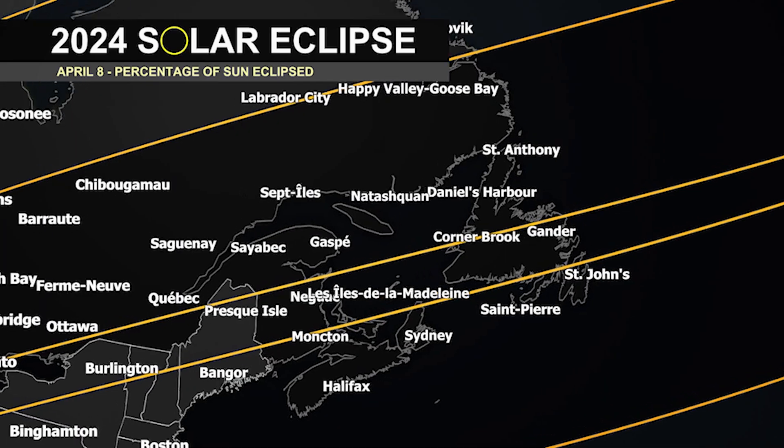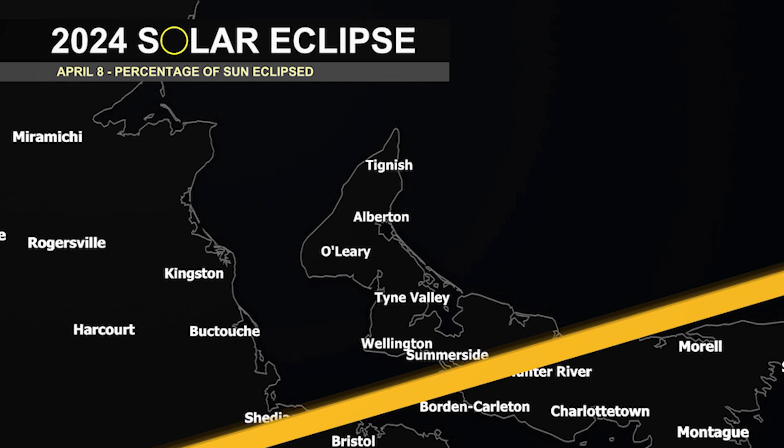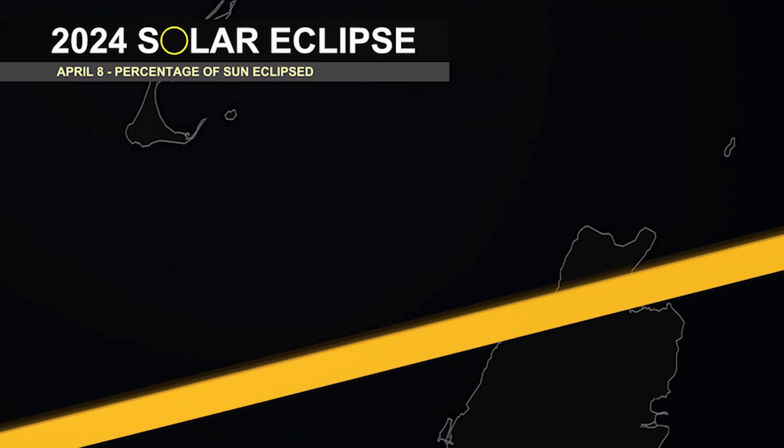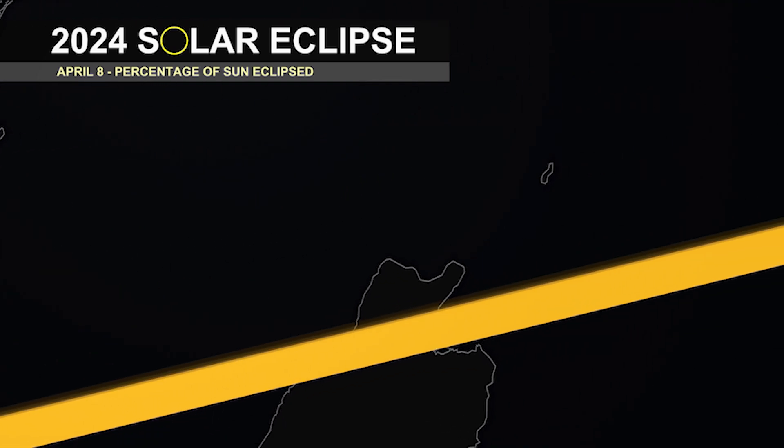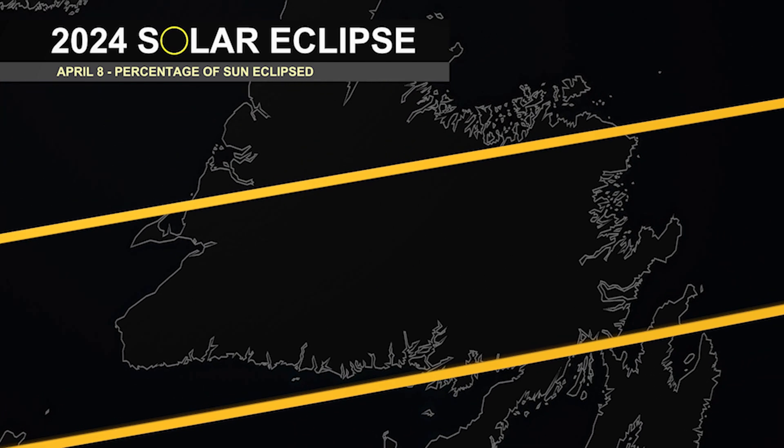And some might say, oh, there was an eclipse back in 2017 that went through North America. But it's different when it is in your backyard. So here in Halifax, we will not see totality. We'll see a partial phase. But many communities, like you mentioned, in New Brunswick, Prince Edward Island are going to see totality go right over their homes.